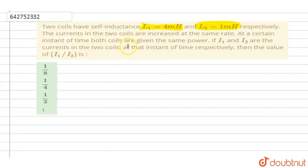The currents in two coils are increased at the same rate. At a certain instant of time, both coils are given the same power. If I1 and I2 are the currents in two coils at that instant of time respectively, then find the value of I1 by I2. You are supposed to find the ratio of the currents of the two coils.